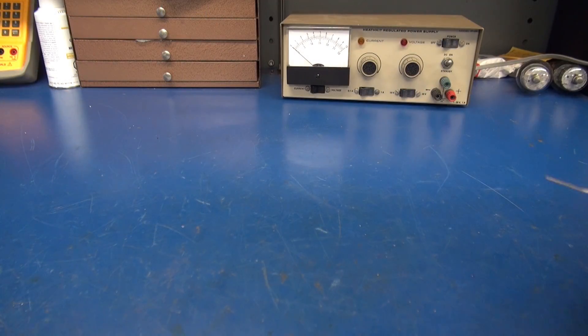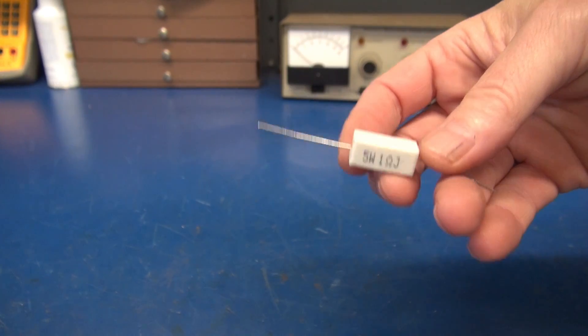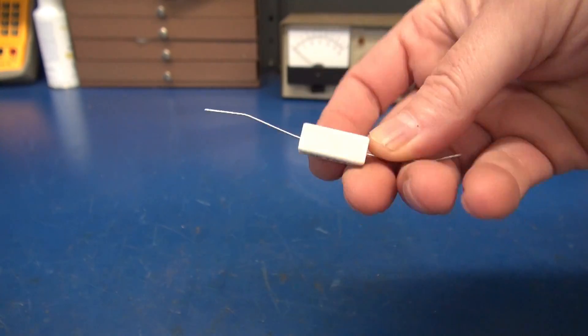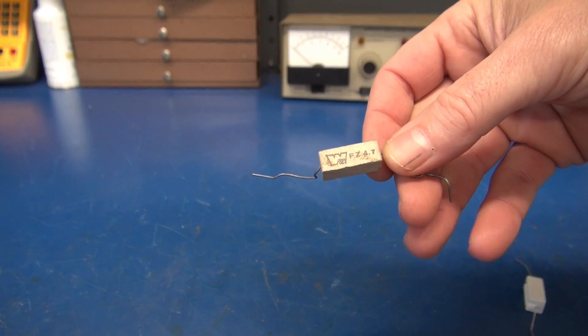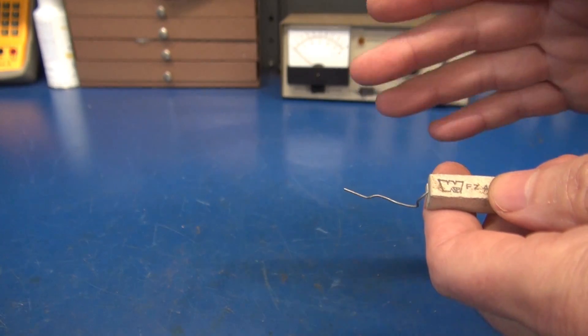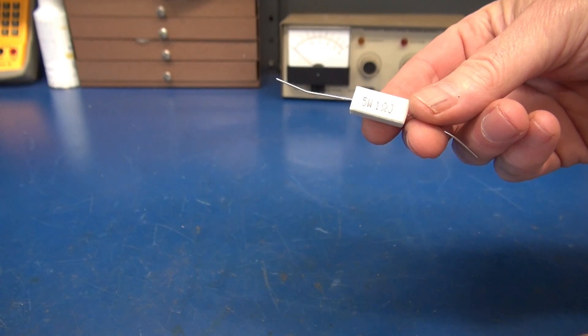All right, to make our custom shunt resistor, I'm gonna start with a one ohm five watt wire wound resistor. This is the cement type that have the molding in the back. You can do the same thing with, say, a 4.7 ohm resistor. It all depends on the range that you're looking for for your custom shunt. So for this demonstration, we'll use the one ohm resistor.